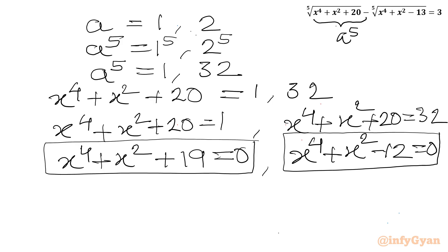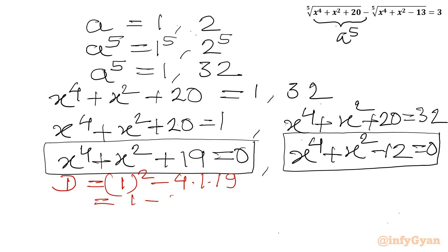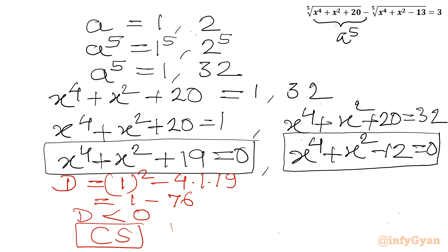For x⁴ + x² + 19 = 0: discriminant = 1² − 4(1)(19) = 1 − 76, which is negative. Complex solutions arise, so we reject this case.